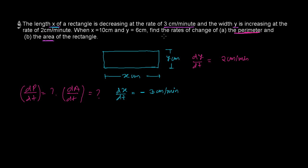They are giving conditions: when x equals 10 cm and y equals 6 cm. This condition applies for both the perimeter and area rate of change calculations.